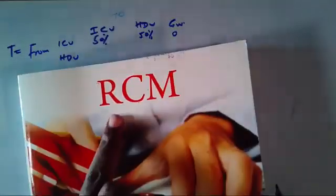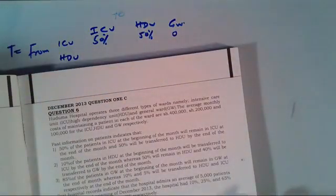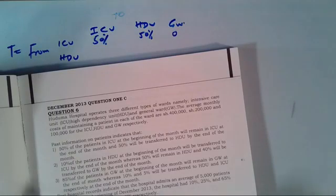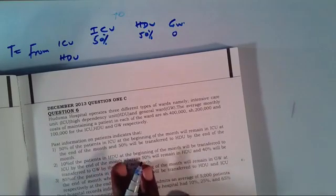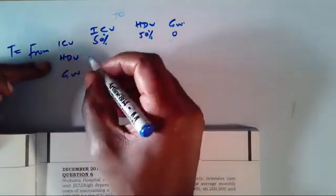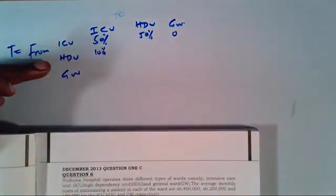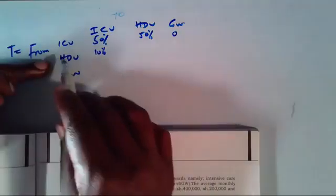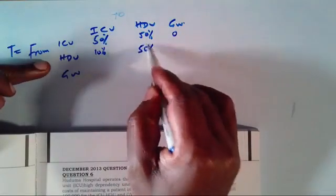In note number 2, we are told 10% of the patients in HDU at the beginning of the month will be transferred to ICU by end of month, whereas 50% will remain in HDU and 40% will be transferred to General Ward. So: HDU to ICU is 10%, HDU to HDU is 50%, and HDU to General Ward is 40%.